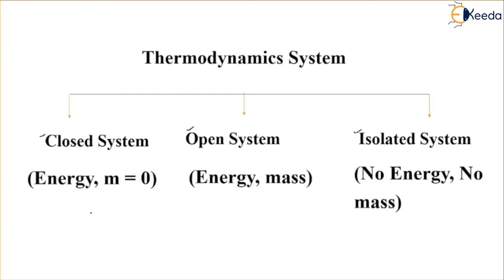As you can see, it is written here in front of closed system: m equals to zero. This m represents mass. So m equals zero does not mean mass itself is zero — it means the transfer of mass will be zero inside the system. But energy transfer is possible. In open system, mass transfer is possible as well as energy transfer. In isolated system, neither energy transfer nor mass transfer is possible. These are the three types of system.